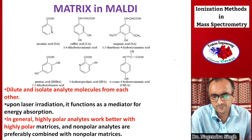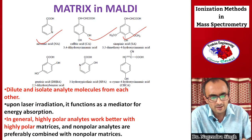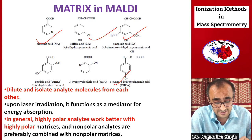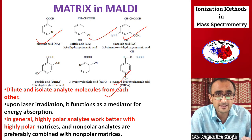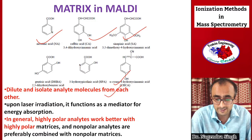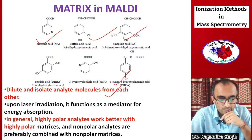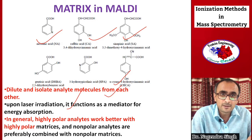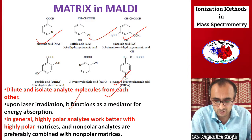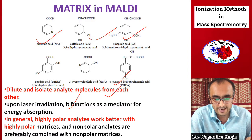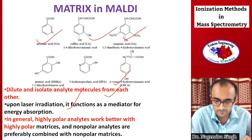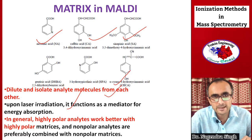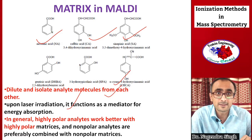Different types of matrix are used in MALDI, such as nicotinic acid, caffeic acid, sinapinic acid, or alpha-cyano-4-hydroxycinnamic acid. The function of the matrix is to dilute and isolate analyte molecules from each other, preventing aggregation so analytes remain individual. Upon laser irradiation, the matrix acts as a mediator of energy absorption — absorbing energy from the laser and transferring charge to the analyte. In general, highly polar analytes work better with highly polar matrices, and non-polar analytes are preferably combined with non-polar matrices.